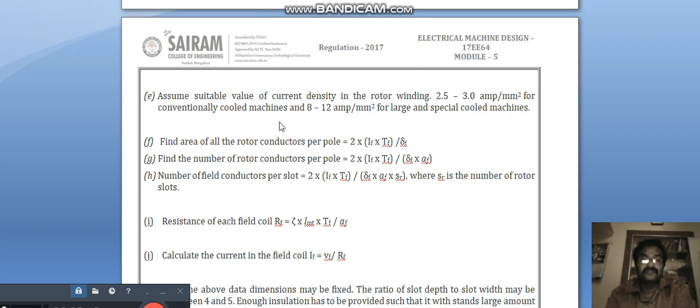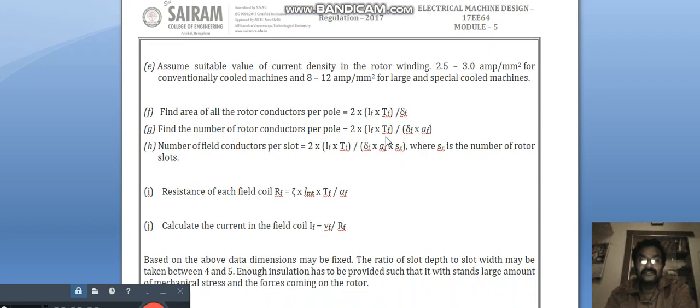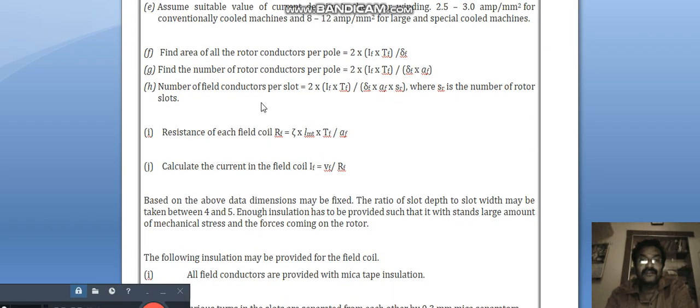Find area of all rotor conductors: conductors per volt is equal to 2 × I_f / δ_f × A_f. Find the number of rotor conductors per volt is equal to 2 × I_f / δ_f × A_f. Number of field conductors per slot is equal to 2 × T_f / δ_f × A_f × S_r, where S_r is number of rotor slots.